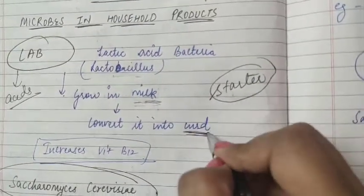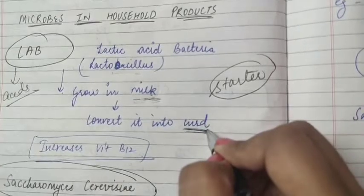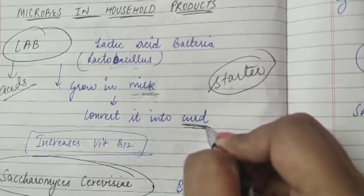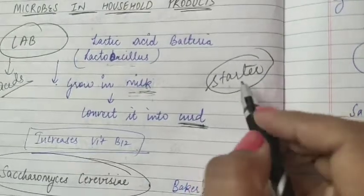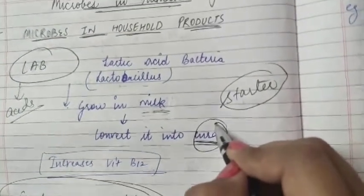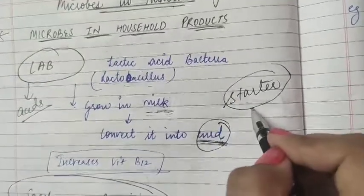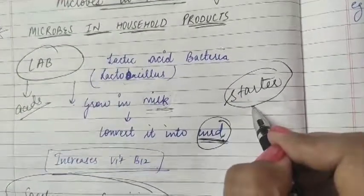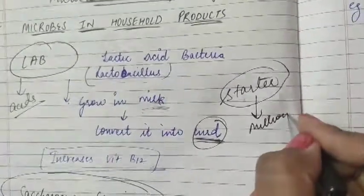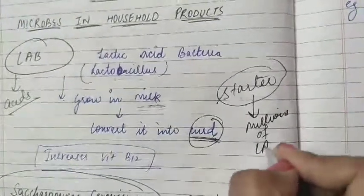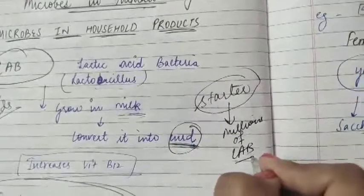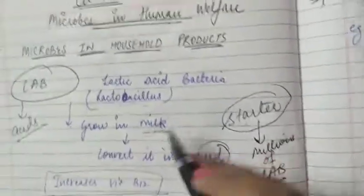The second time we want to make curd from fresh milk, we add a small amount of curd to fresh milk — it acts as a starter. It contains millions of LAB which increase in number at a suitable temperature and help convert milk to curd.